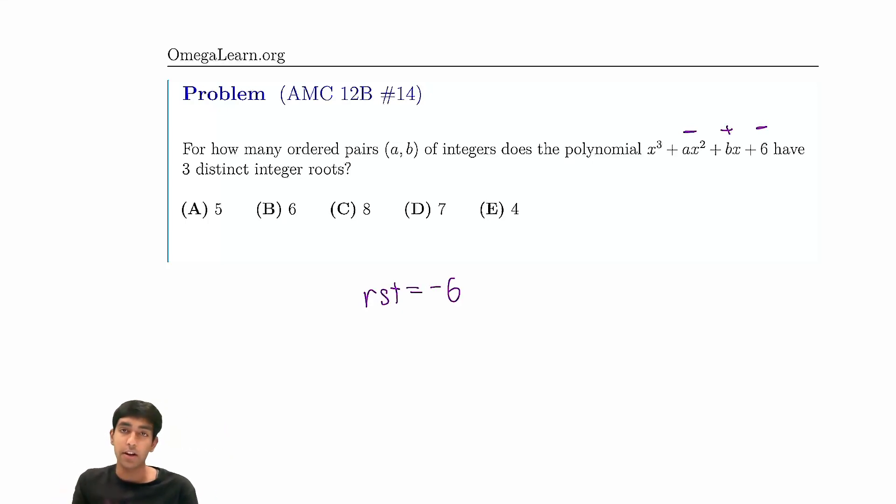So what are the possibilities here? For now, let's just ignore the sign. What are the possibilities for the absolute values of r, s, and t? Well, there's really only two possibilities: 1, 1, 6, or 1, 2, 3, multiplying to 6.